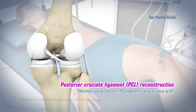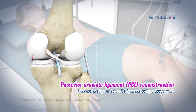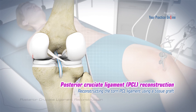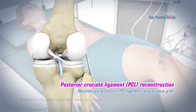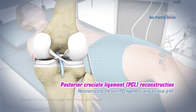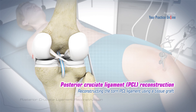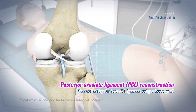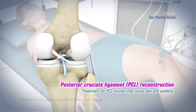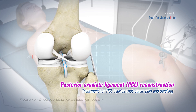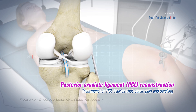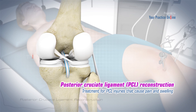Posterior cruciate ligament, or PCL, reconstruction is a surgical procedure which involves reconstructing the torn PCL ligament using a tissue graft taken from another part of the body or a deceased donor, for treating PCL injuries that cause pain, swelling, and instability in the knee joint.